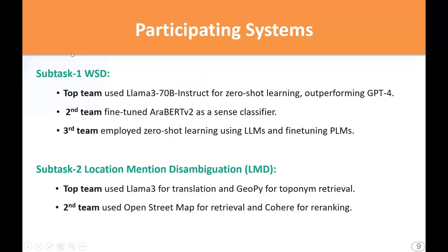Here is a summary of the participating systems. For the WSD task, the top team used LLaMA3 and GPT-4 with zero-shot learning, while the second team conducted three experiments with AraBERT version 2 and a classification approach fine-tuned on the Salma dataset to outperform the others. The third team employed zero-shot learning with LLMs and fine-tuning of pre-trained language models.